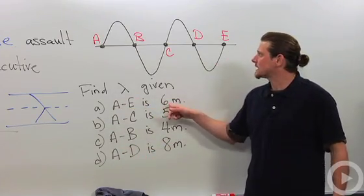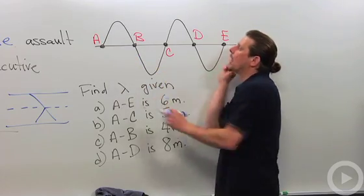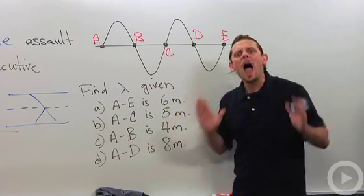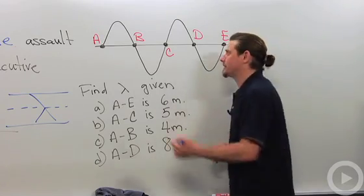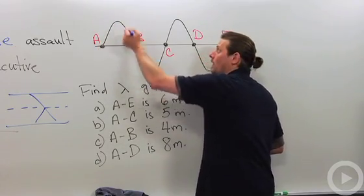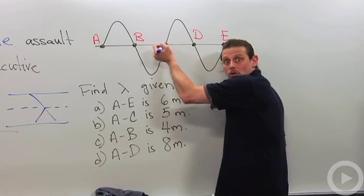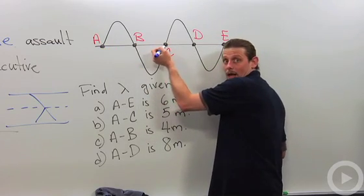So let's look at the first one. A to E is six meters. A to E. So what we've got to do is figure out how many wavelengths appear between A and E. Well I start at A and here I go. Well that's a whole wave because I started off at A, and C's doing the same thing.